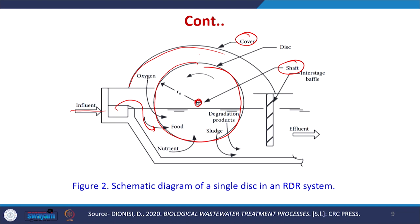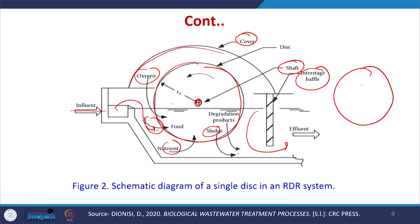The whole disc system is covered by a layer on the top. After water treatment, the water flows out and nutrients and food are taken by the microorganisms grown on the disc. Oxygen is taken when the disc is exposed to the atmosphere, and degradation products and sludge are carried into the effluent. It is possible to have a second stage or third stage RDR systems in series.